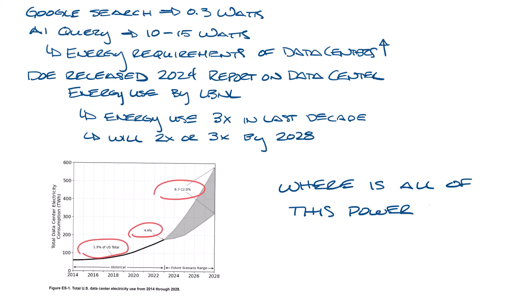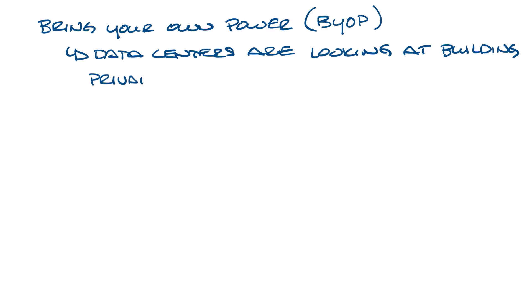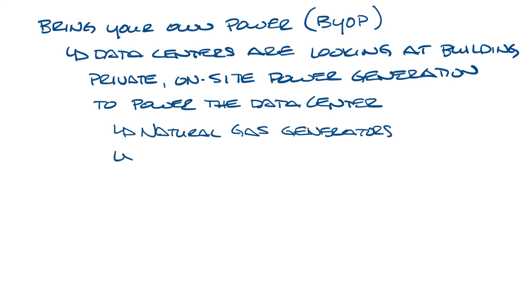So where's all this power going to come from? This is where Bring Your Own Power, BYOP, comes in. The concept is simple. Data centers are looking at building private, on-site power generation abilities to power their data centers. This power can come from natural gas generators, fuel cells, solar or wind, microgrids, and even nuclear power.